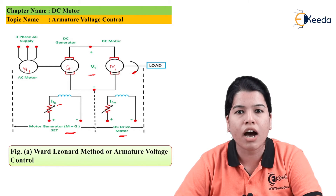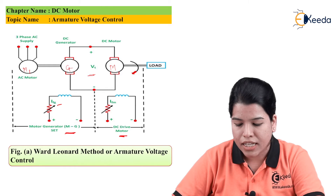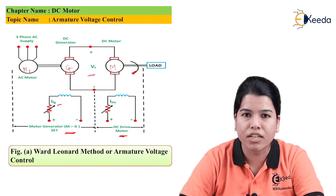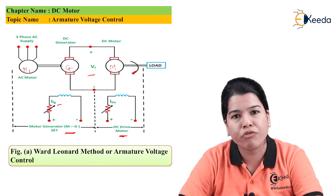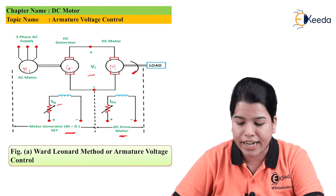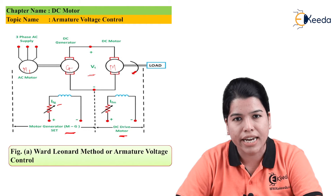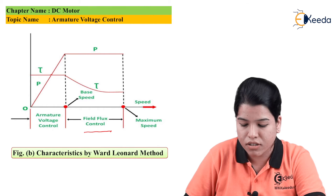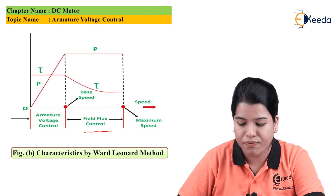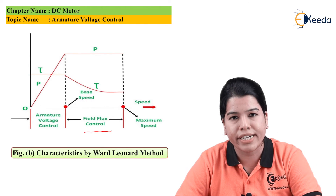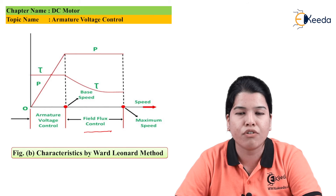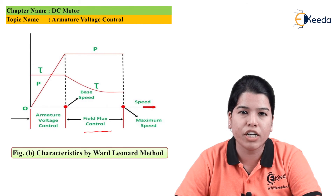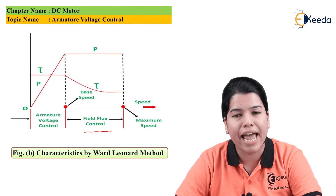Speed increases, giving us control above the rated speed. Since the armature current and input to the motor are constant, we get constant power. However, as the flux and speed ωm change, the torque is variable. So this region gives constant power and variable torque, as seen in the characteristic for field flux control. For a wide range of speed control, both armature voltage control and field flux control can be used together, enabling speed control both below and above the rated speed.